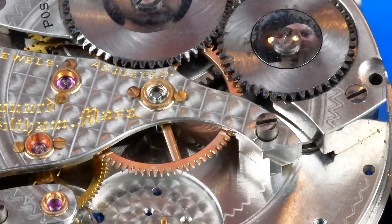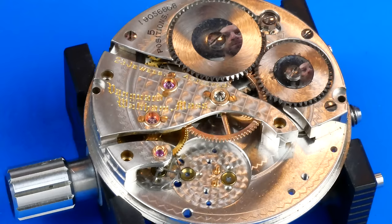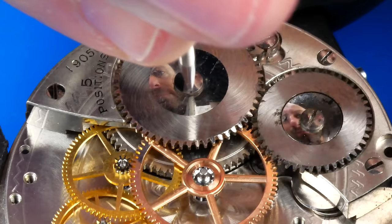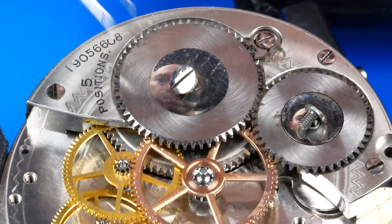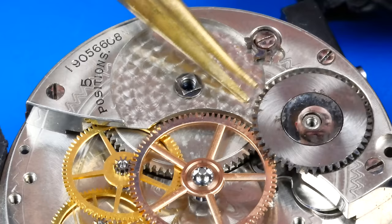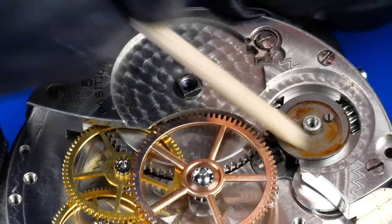The train wheel bridge is now removed, but I take my time to admire the beautiful design and amazing craftsmanship as I dive deeper into this movement. The ratchet wheel and crown wheel are removed. The crown wheel core was a little stuck due to the old oils. That will clean right up though.